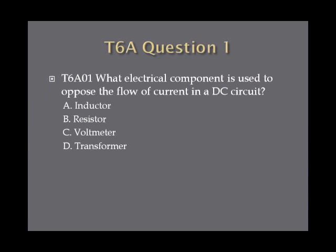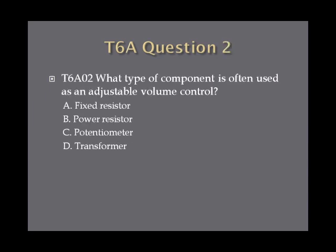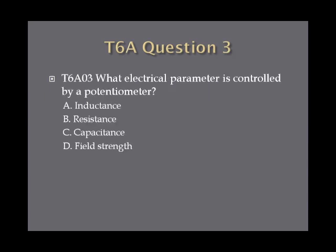Question 1: What electrical component is used to oppose the flow of current in a DC circuit? Question 2: What type of component is often used as an adjustable volume control? A, fixed resistor. B, power resistor. C, potentiometer. Or D, transformer.